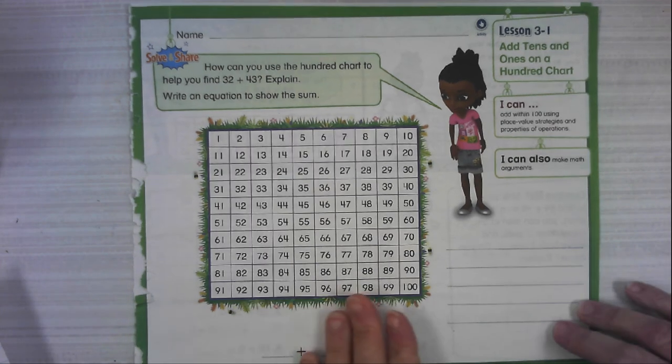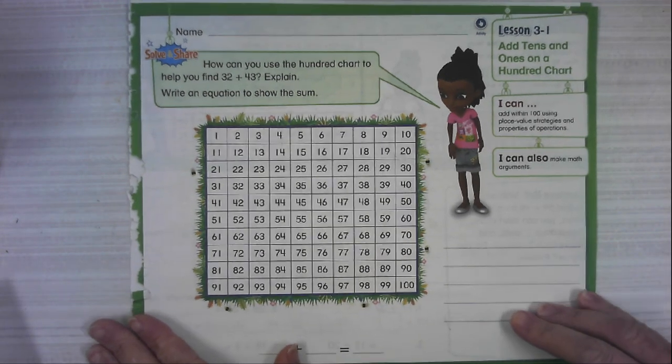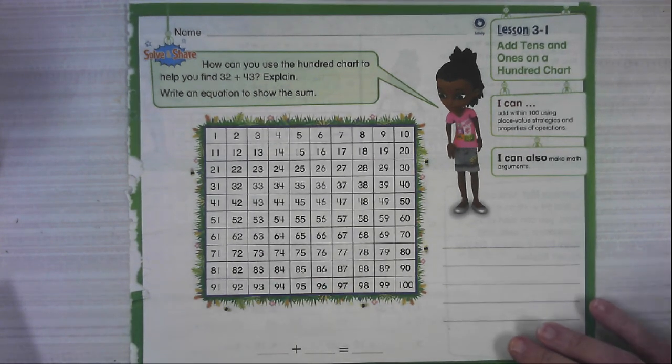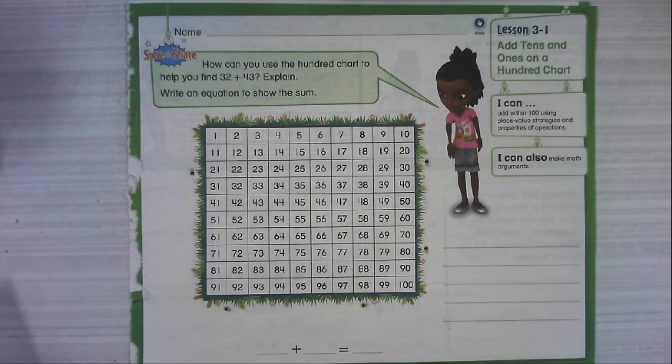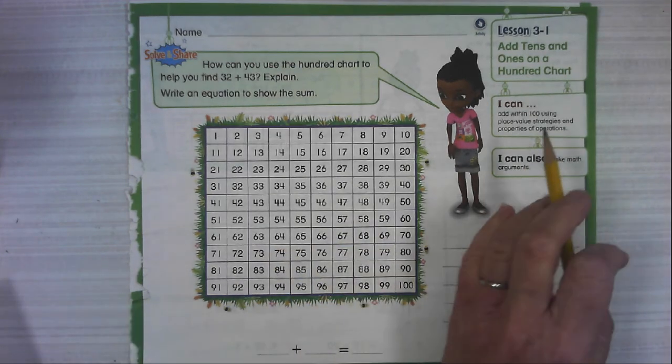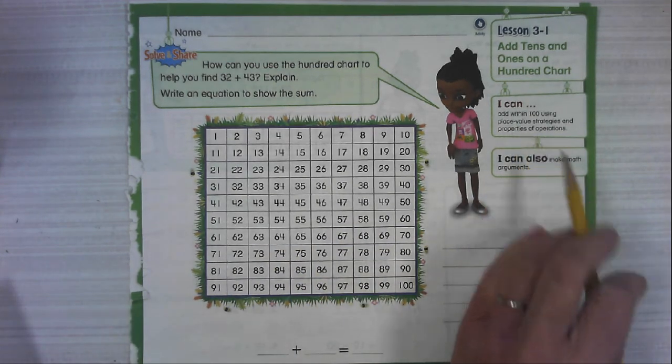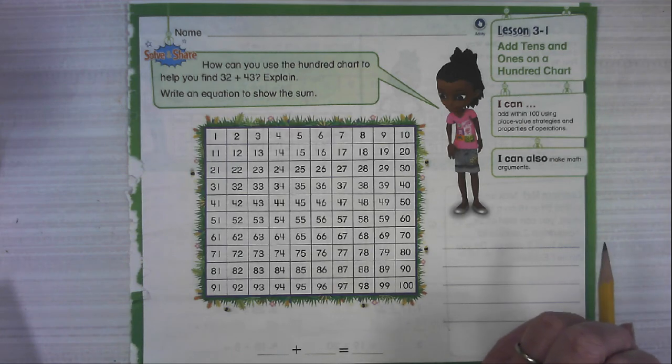So I know you're very familiar with your hundreds charts from first grade and we're going to refresh ourselves and make sure we can still use these to help us find the answers to two-digit addition problems. So today we want to be able to add within 100 using place value strategies and properties of operations.